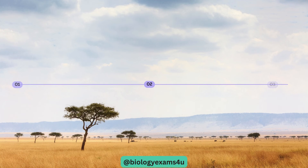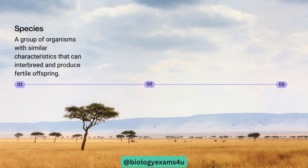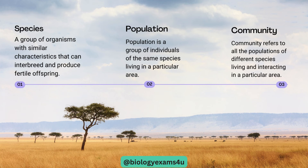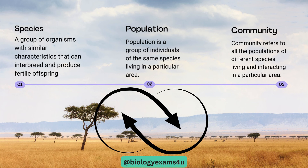To summarize: species refers to a group of organisms that share similar characteristics and can breed to produce viable offspring. Population is a group of individuals of the same species living in a particular area. Community refers to diverse populations of different species living and interacting in a particular area. All these organisms interacting with each other and with the environment form the grassland ecosystem.